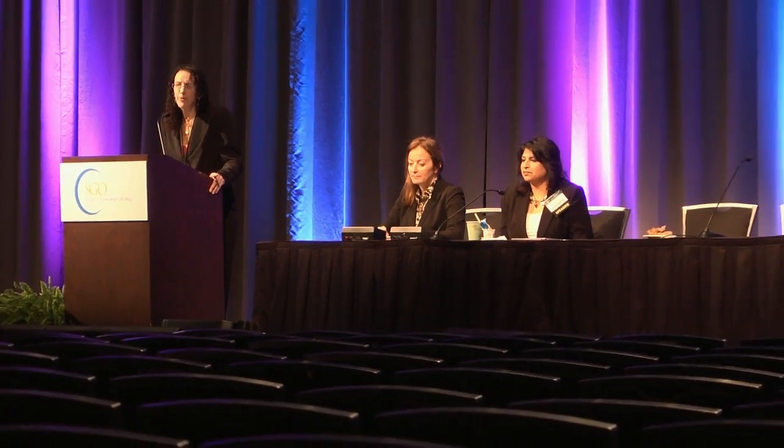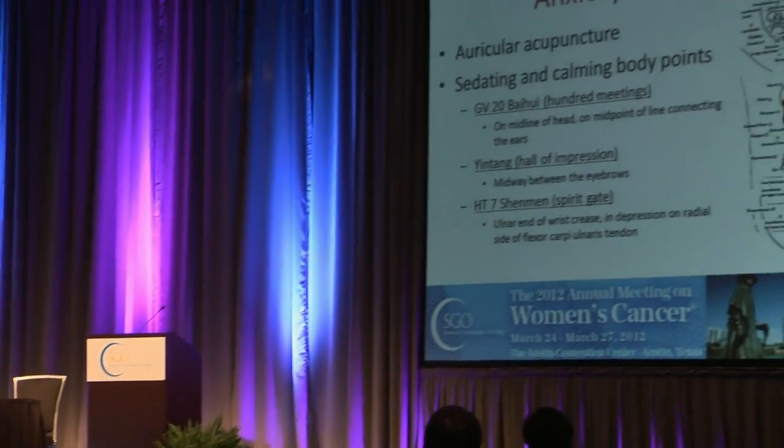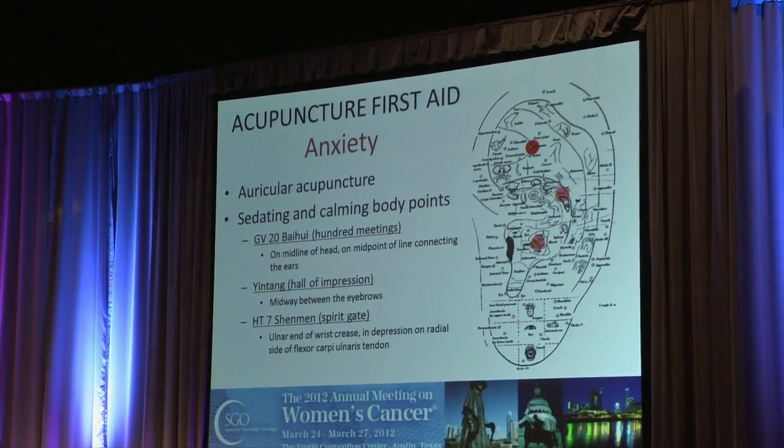In my last few minutes, I'm going to talk about a few conditions where you can alleviate distress — and again, you can do this without needles. Starting with anxiety, which is a very big issue when facing life-threatening disease and suffering. A lot of ear points have to do with alleviating anxiety, and auricular acupuncture is a whole expertise. In terms of body points, I've listed three points here, and I've included the English translations of the Chinese terms. The governing vessel 20 point is called the 100 Meetings. Yintang is Hall of Impression. And Shen Men means Spirit Gates.